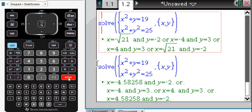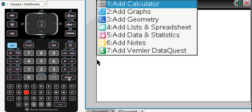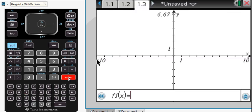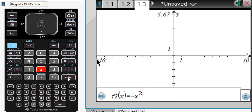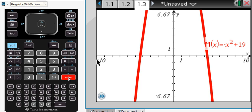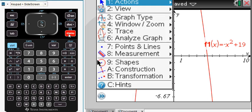Let's take a look at it graphically. I'll show you a couple of tips for doing it graphically. So on a graph page, we wanted to graph two things. We wanted to graph the negative x squared plus 19, and I want to graph a circle.